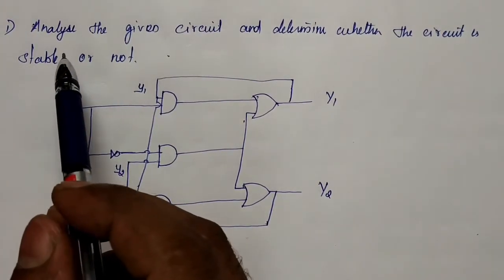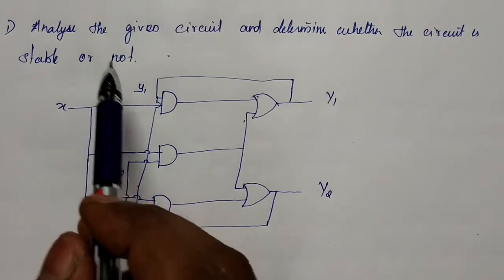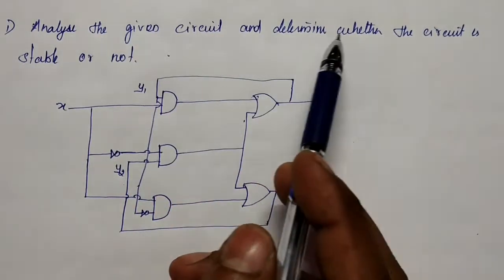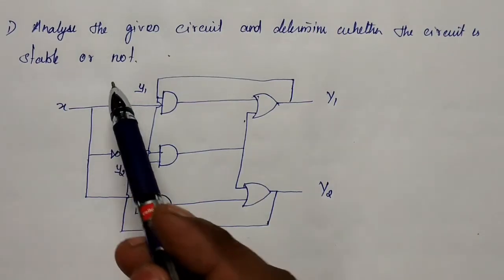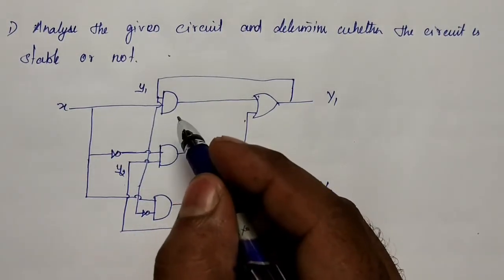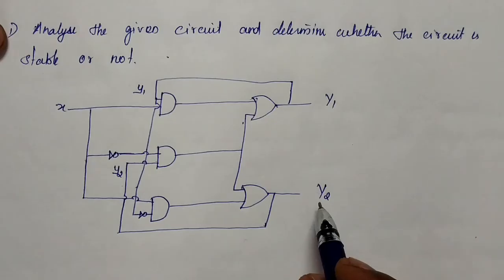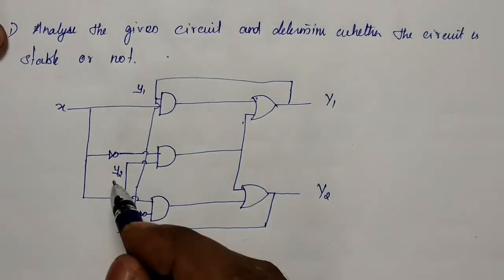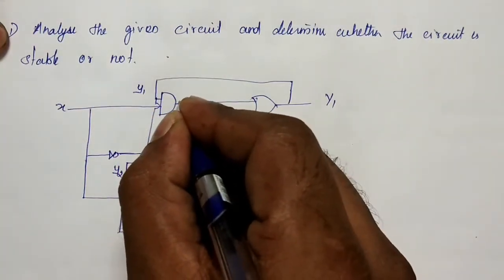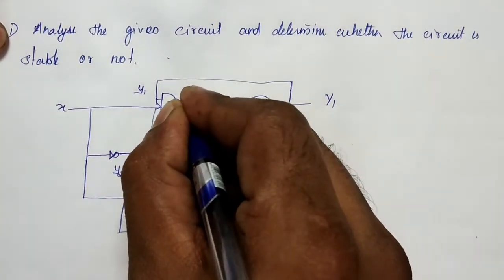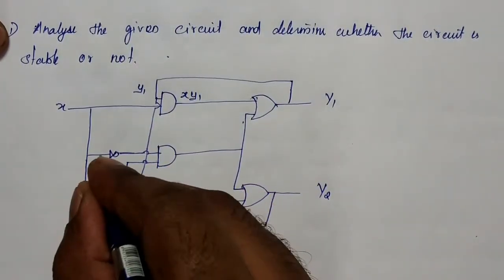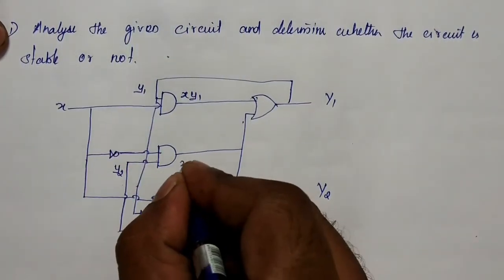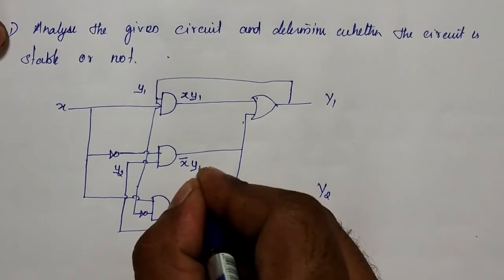Consider an example: analyze the given circuit and determine whether the circuit is stable or not. Here first we need to find the expressions. We are having Y1 and Y2, and their present states are small y1 and y2. The output of the first AND gate is xy1, and here x-bar y2.